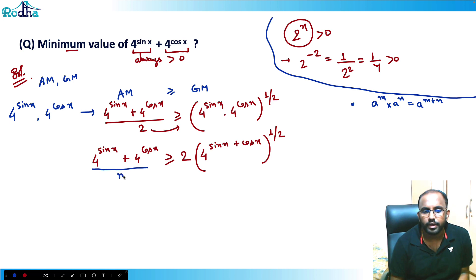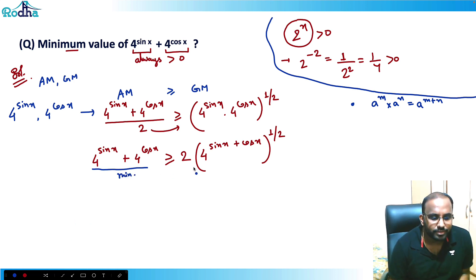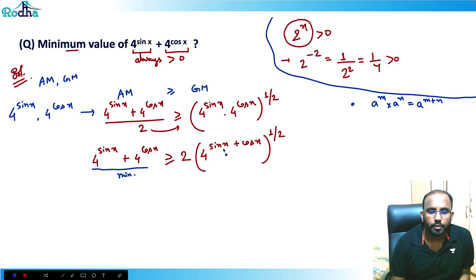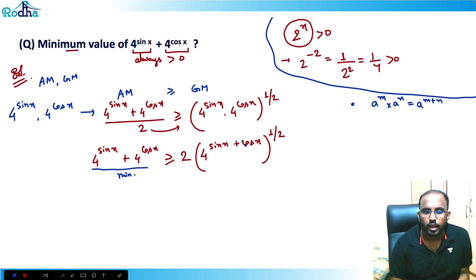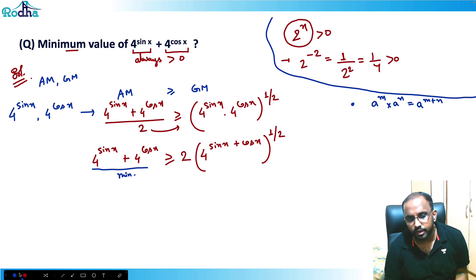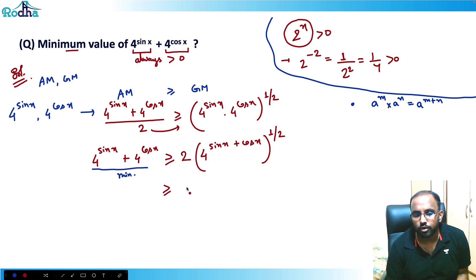To minimize the left side, I need to minimize the right side. The right-hand side is 2 · 4^((sin x + cos x)/2), so I need to find the minimum value of sin x + cos x.